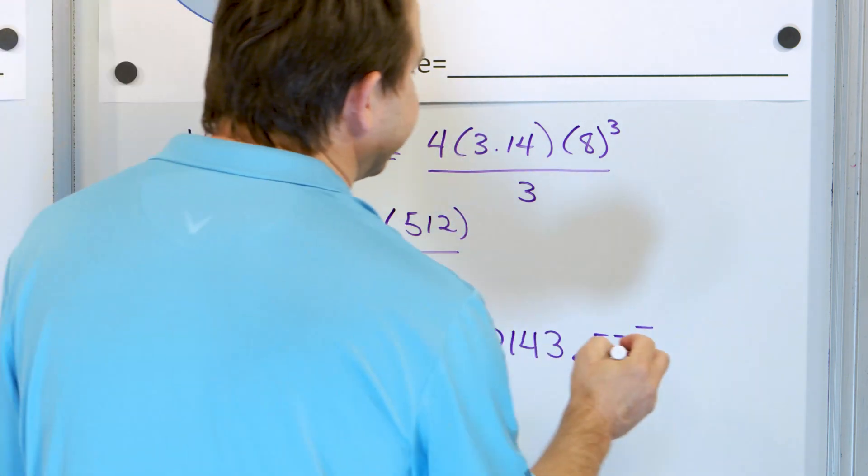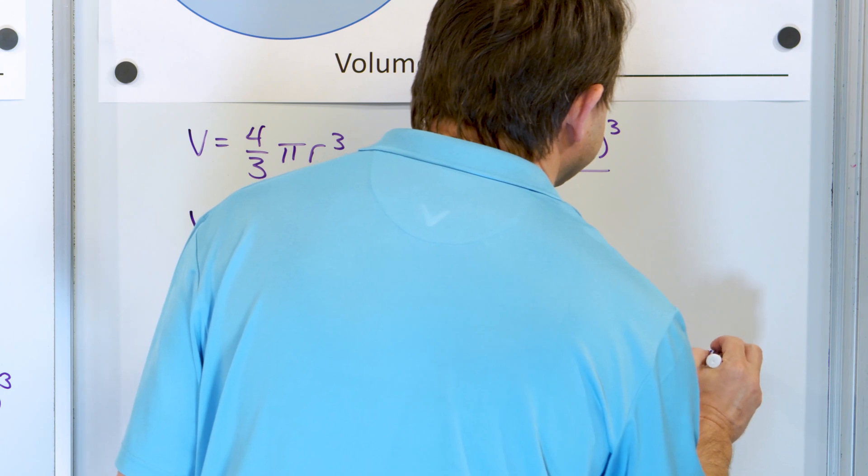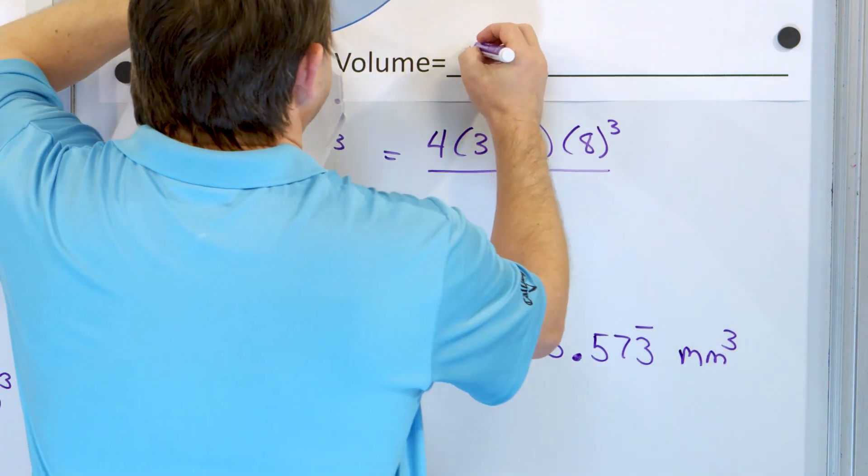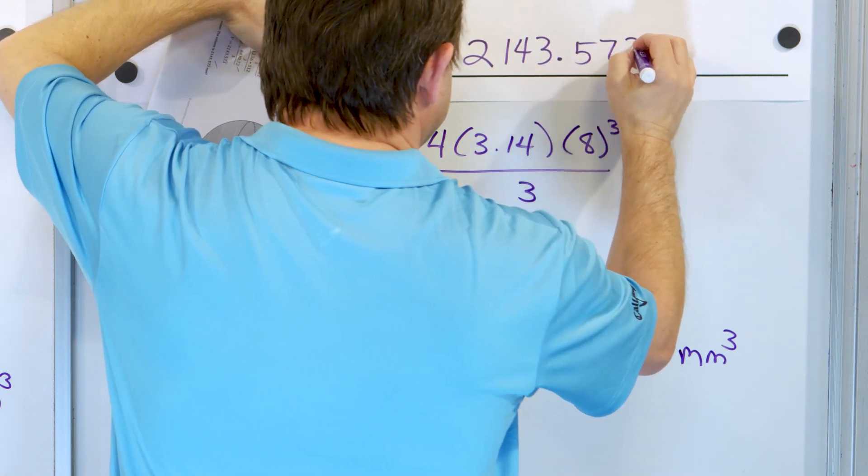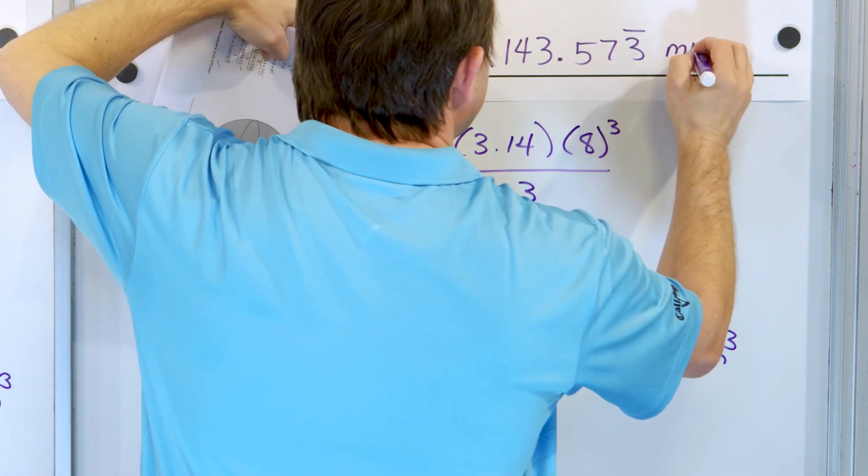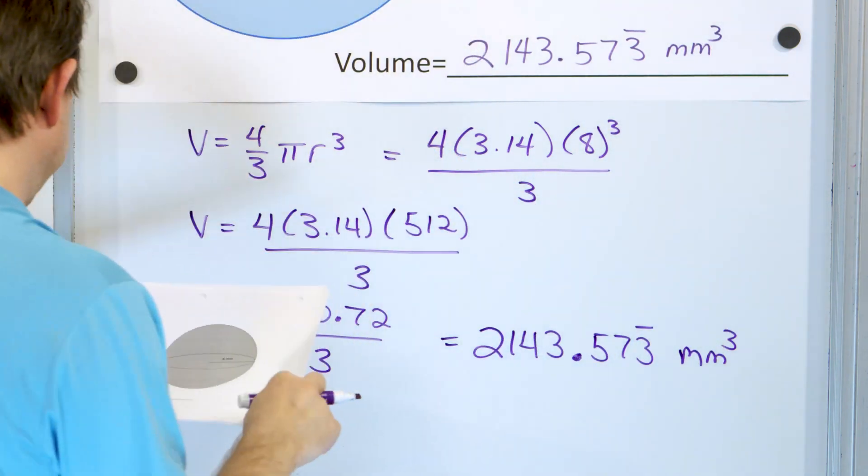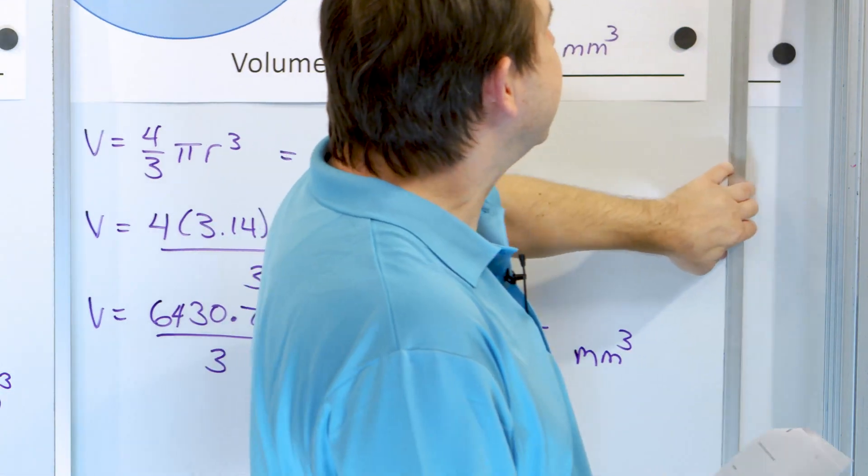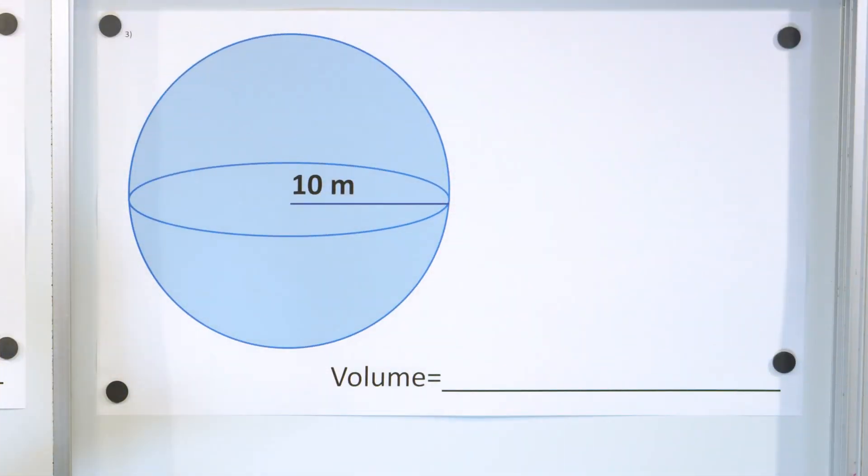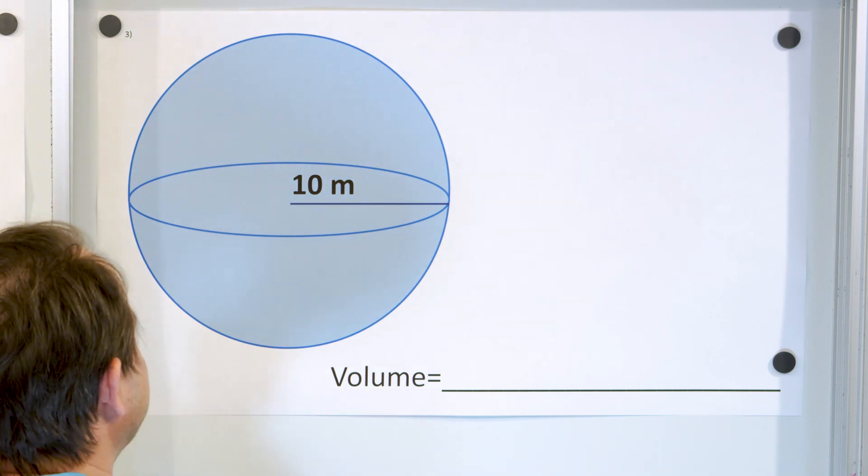And it's in millimeters in this problem, so cubic millimeters. 2143.573 repeating bar, cubic millimeters, or you can call it millimeters cubed. So you can see, same story, different day. We're just getting practice with it here. Alright, the last problem of this set is going to look a little different, but this one here is actually quite similar.